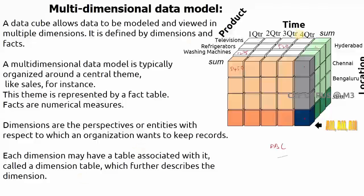Each dimension may have a table associated with it, called a dimension table — one for product, one for time, and one for location. These dimension tables further describe the dimension with hierarchies. For product, you can have levels like LED televisions grouped by model or company name. For time, you can have quarter, month, or week levels. For location, you can have city, state, or country levels.